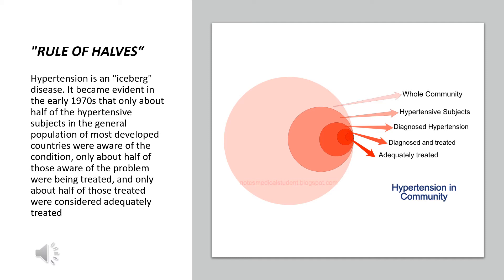Hypertension is an iceberg disease. The cases diagnosed in clinical settings are just the tip of the iceberg, comparable to the visible portion. The real burden of disease in the community is much greater, analogous to the submerged portion of an iceberg. The number of hypertension cases identified clinically is far less than the actual prevalence in the community.